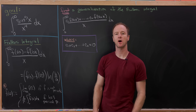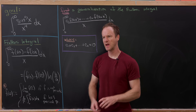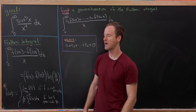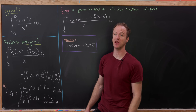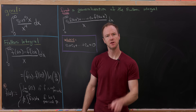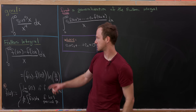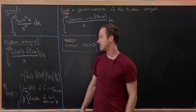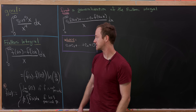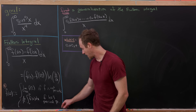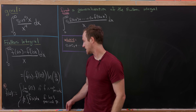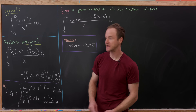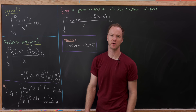A few years ago I made a video on something called the Frulani Integral, and today I'd like to look at a generalization of that integral and a nice application of that generalization. The Frulani Integral is the integral from zero to infinity of f(ax) minus f(bx) over x dx, and the result says that equals f(0) minus f(∞) times the natural log of b over a.